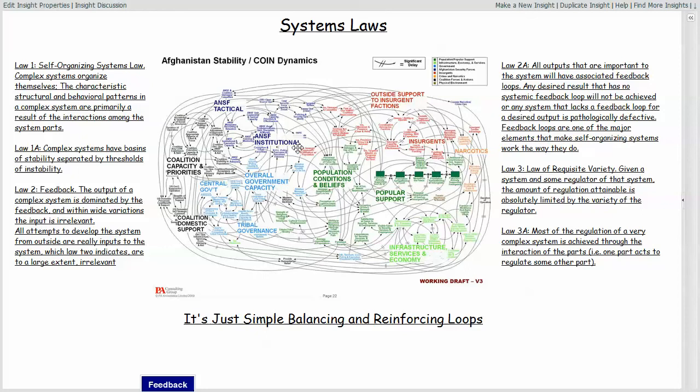The first being complex systems for the most part are self-organizing. The structure, the operation, the behavior is a result of all of the interactions between the components. The behavior patterns are a result of all of those interactions.